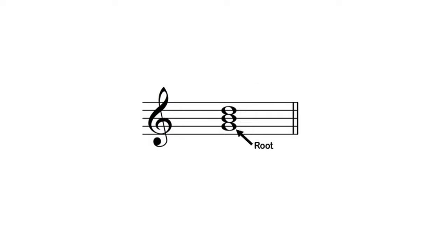The root is the pitch that gives the triad the first part of its name. If you've ever heard someone refer to a B major triad or B major chord, B is the root of the chord. D minor would mean that D is the root of the chord.